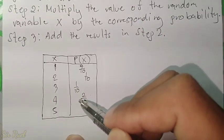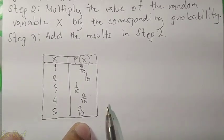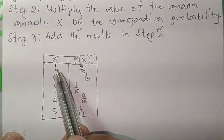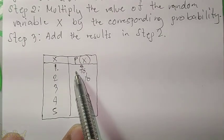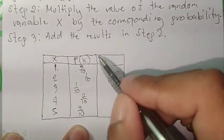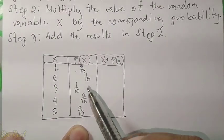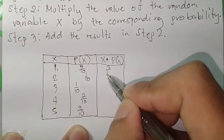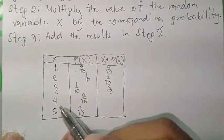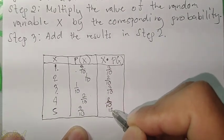Step 2 says we need to multiply the value of the random variable x by the corresponding probabilities. We will add another column labeled x times P(x). So: 1 times 3/10 is 3/10, 2 times 1/10 is 2/10, 3 times 1/10 is 3/10, 4 times 2/10 is 8/10, and 5 times 3/10 is 15/10.